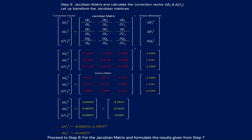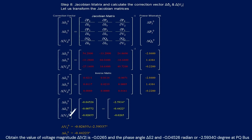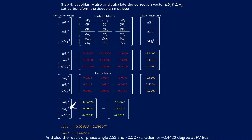Proceed to Step 8: formulate the Jacobian matrix from the results of Step 7. The correction vector equals the inverse of the Jacobian matrix multiplied by the power mismatch. Obtaining the values: voltage magnitude correction = −0.0265, phase angle correction = −0.04526 radians or −2.5934 degrees at the PQ bus, and phase angle correction = −0.00772 radians or −0.4422 degrees at the PV bus.